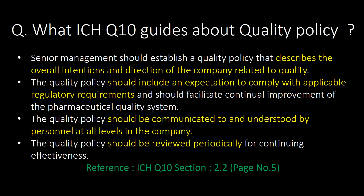What does ICH Q10 guide about quality policy? The four important points are: first, senior management should establish a quality policy that describes the overall intentions and direction of the company related to quality. Second, the quality policy should include an expectation to comply with applicable regulatory requirements and should facilitate continual improvement of the pharmaceutical quality system. Third, the quality policy should be communicated to and understood by personnel at all levels in the company. Fourth, the quality policy should be reviewed periodically for continuing effectiveness.